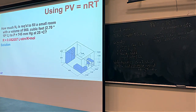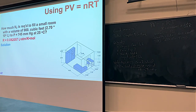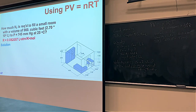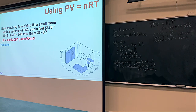Here's a type of problem you might see. We're going to fill a small room with nitrogen. The room has a volume — 960 cubic feet, which is 2.70 × 10⁴ liters. If you can use liters, definitely use that — it's a lot easier because the R constant has units of liters in it.